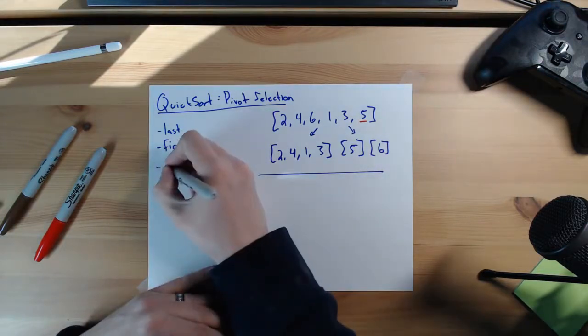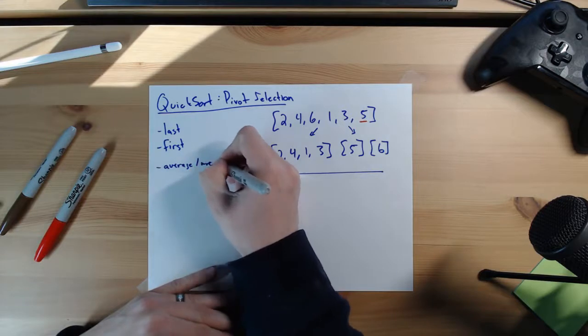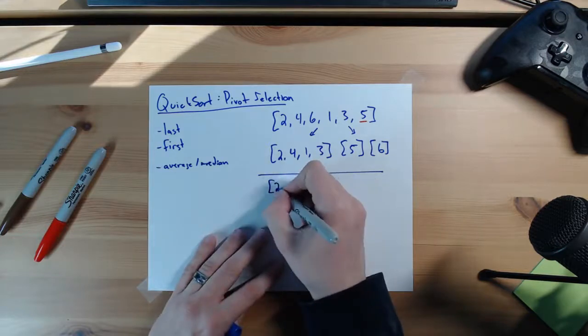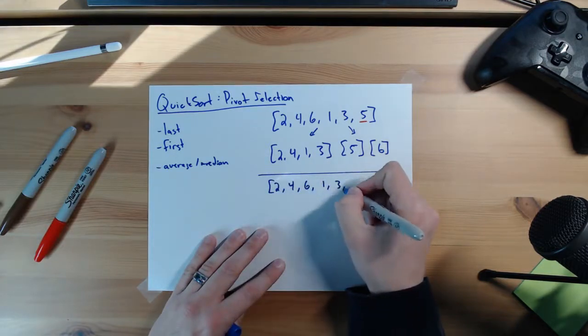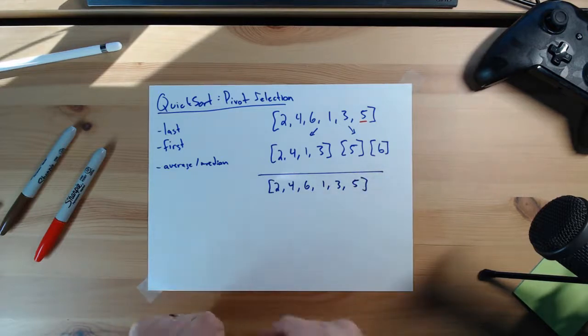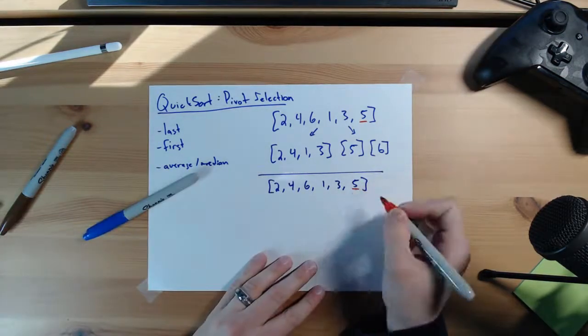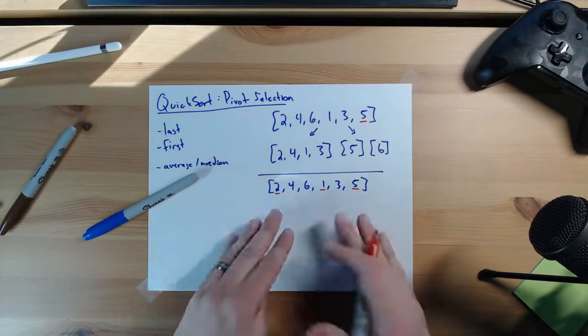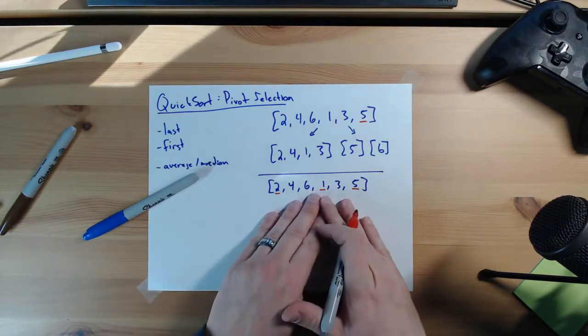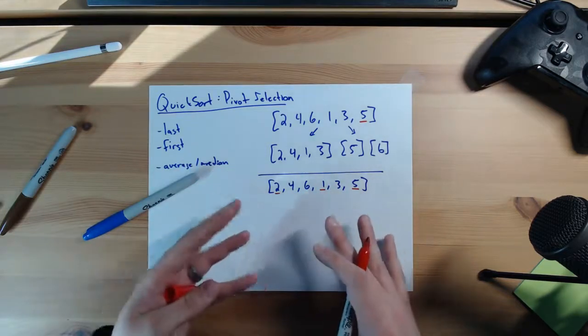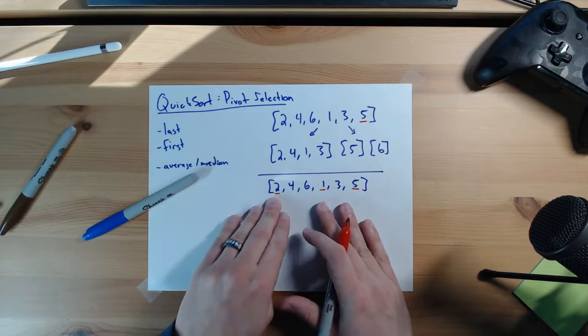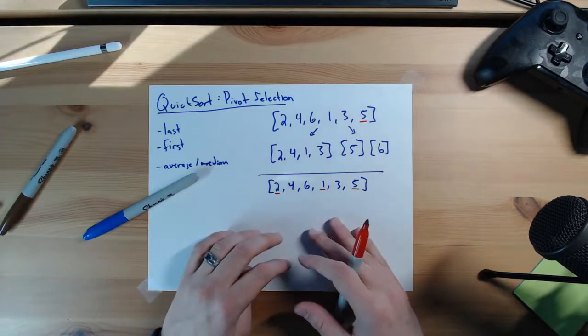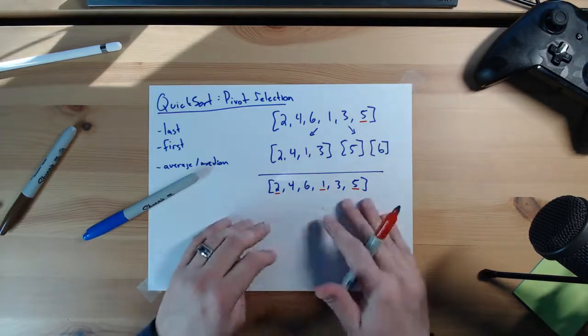We can also try and pick some sort of average or median element and we could do that by looking at and picking a couple different elements. So for example, we could do something like let's look at the last element, the first element and then maybe one of these middle ones, the 6 or the 1. We'd say well, let's look at 2, 1 and 5. We just look at a middle element and pick of those three which one is the middle. So we could say let's pick this first one, 2, because it's in the middle of 1, 2 and 5. It's kind of like a quick and dirty way to pick an almost average type element that's in here.